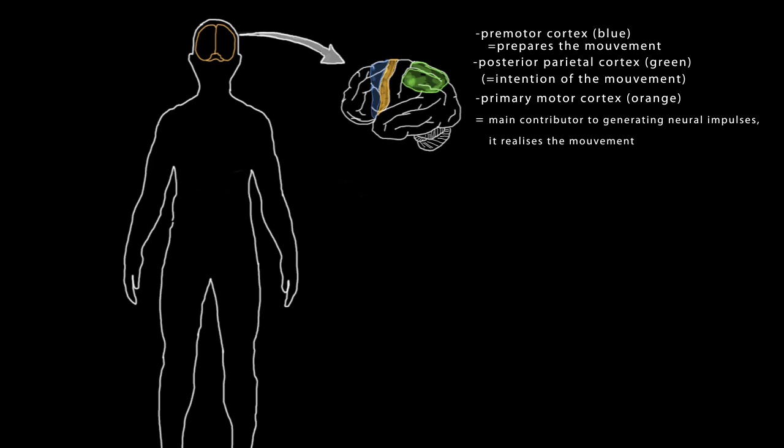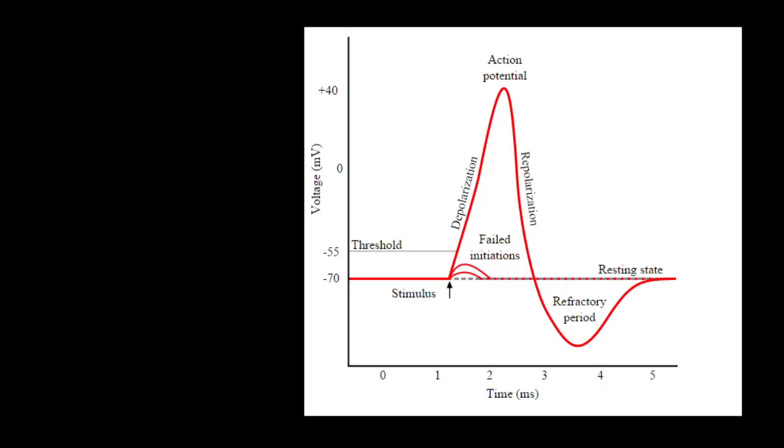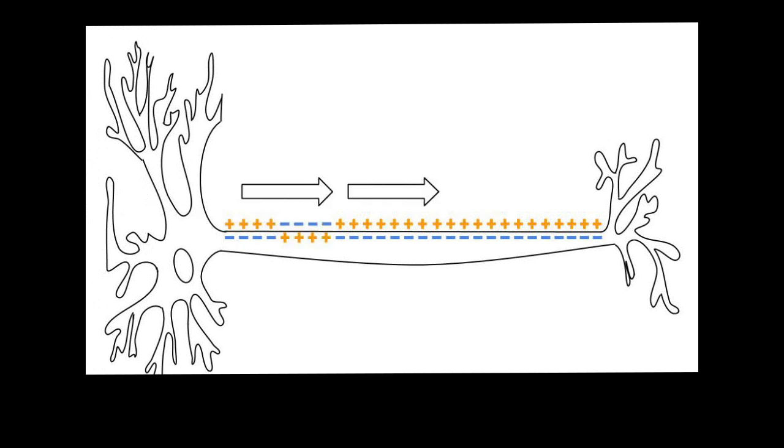An electrical signal or action potential in the cell body situated in the primary motor cortex is then formed and carried across what we call the pyramidal neurons. The action potential is described by the following graph. Depolarizations and polarizations take place due to the entry and exits of specific ions on the membrane.